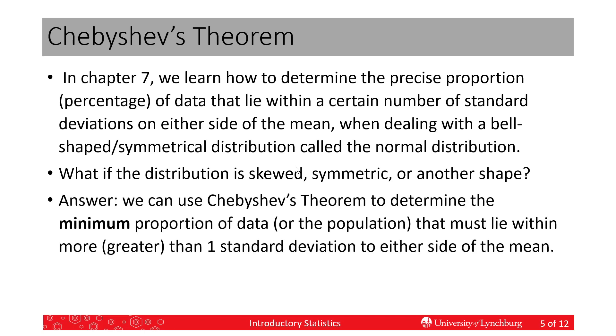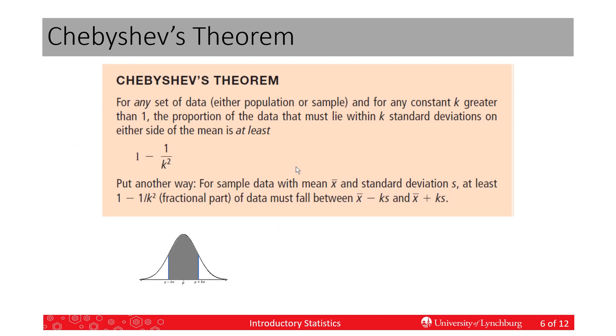Well, what can we do then? What we can do is we can use something called Chebyshev's theorem to determine the minimum, and that is very important. It can be a lot more, but it has to be at least this percentage or proportion of the data or the population, depending on if we're using a sample or not, that has to lie within so many standard deviations on either side of the mean.